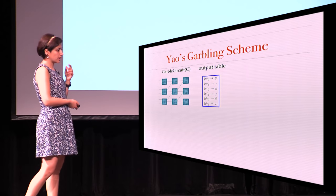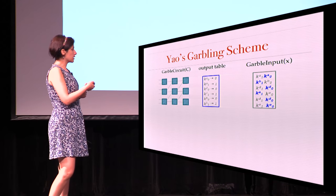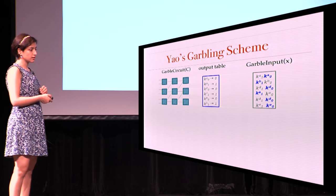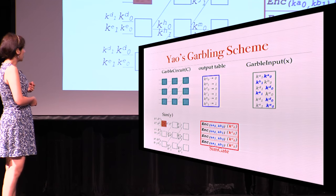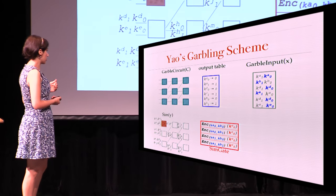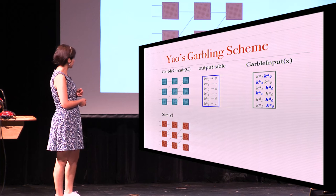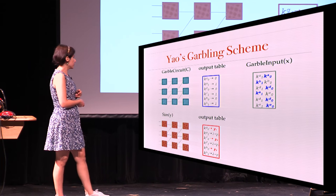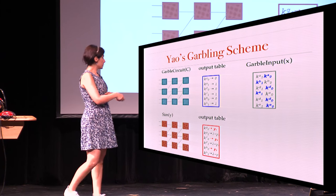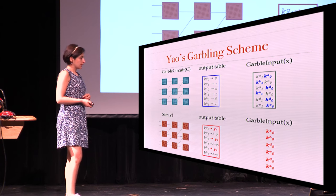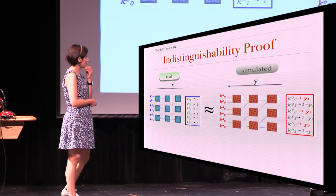You also have to map the output wires into values 0 and 1, and this is done during the offline phase. For garbling the input, you just give back the keys that are associated with the input x. What does the simulator do? It tries to do the same thing as much as possible. It chooses the keys but doesn't know what the gate is doing, so it will just encrypt all zeros — just one key is going to be in the simulated gate — and repeat the same thing for all of them. Since it knows the output, it can map the output wires associated with 0 to the values of y. To garble the input, it gives all zeros.